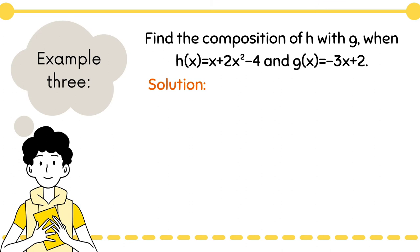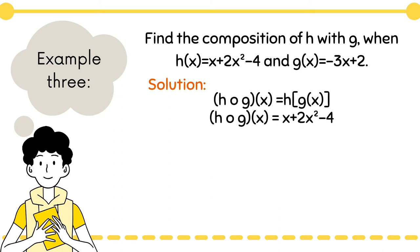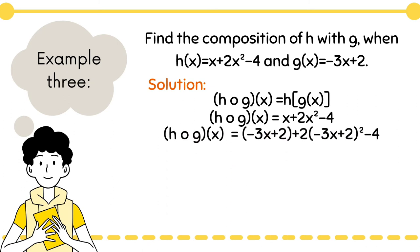For a third example, let's try an example that contains an exponent in one function. Example number three: find the composition of h with g when h(x) = x + 2x² − 4 and g(x) = −3x + 2. So write down h of g of x and write down our h(x): x + 2x² − 4. We substitute the x with our g(x), so now we have (−3x + 2) + 2 times (−3x + 2)² − 4.